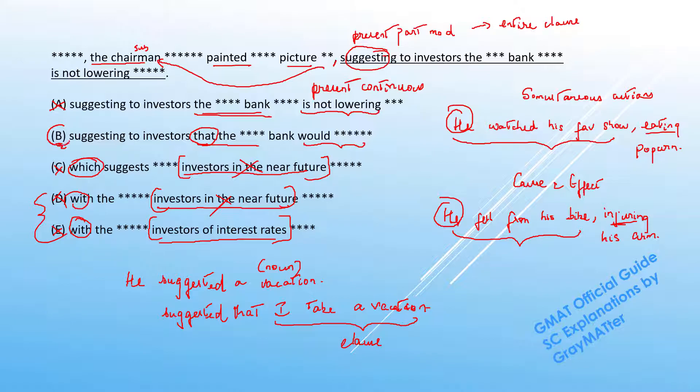This leaves us with the right answer choice B for Bravo, having the comma -ing or the present participle modifier at the end of the clause indicating the right logic.